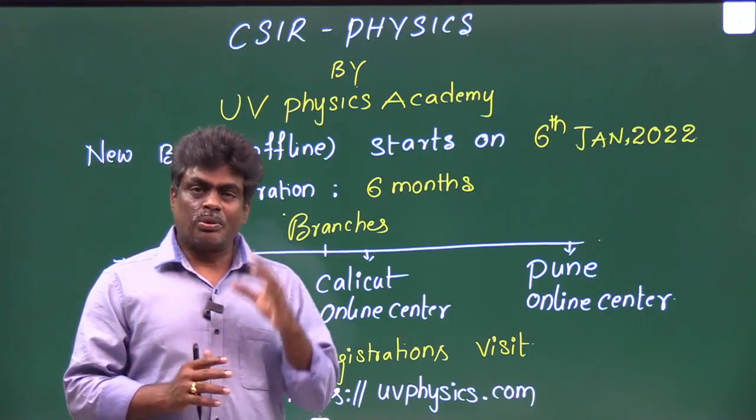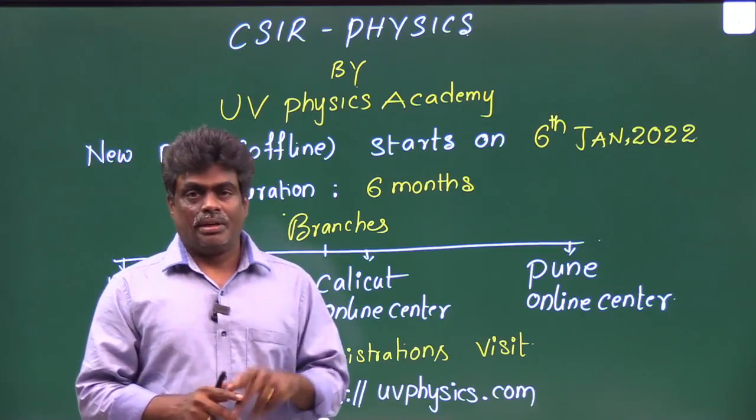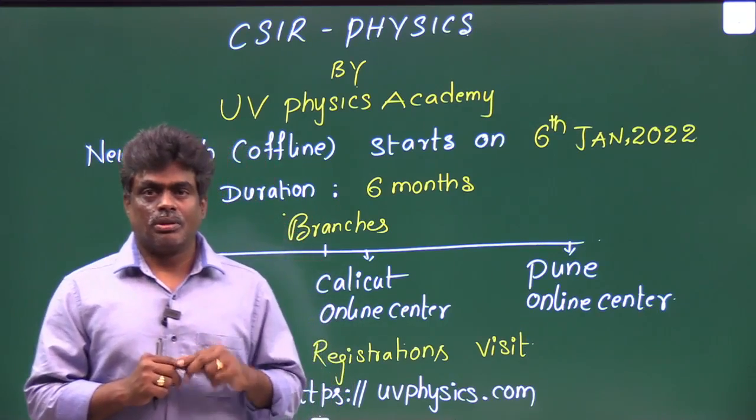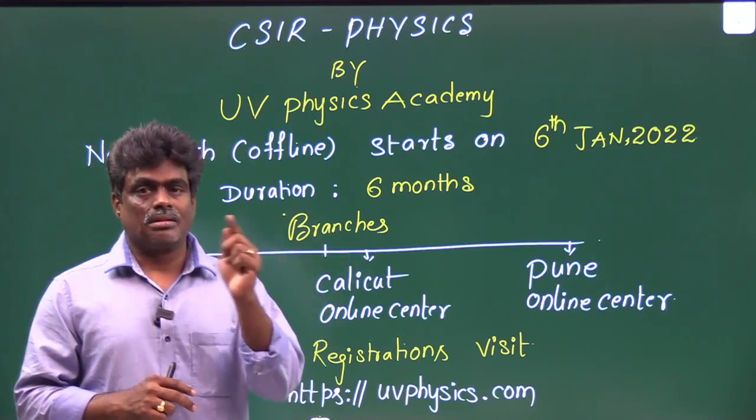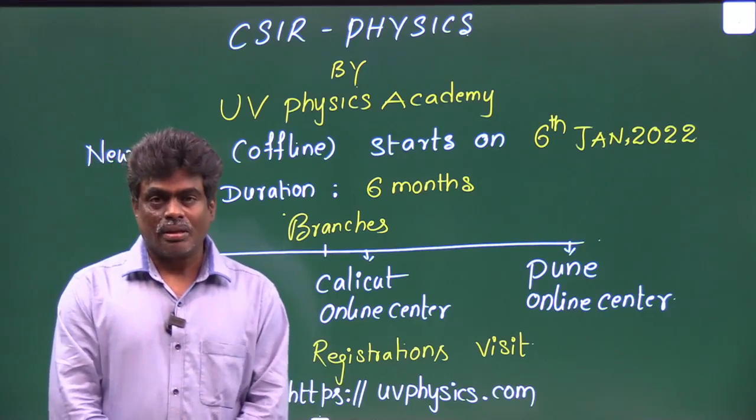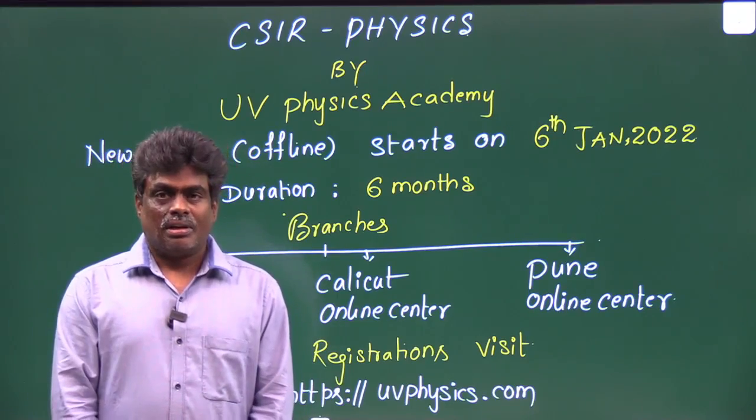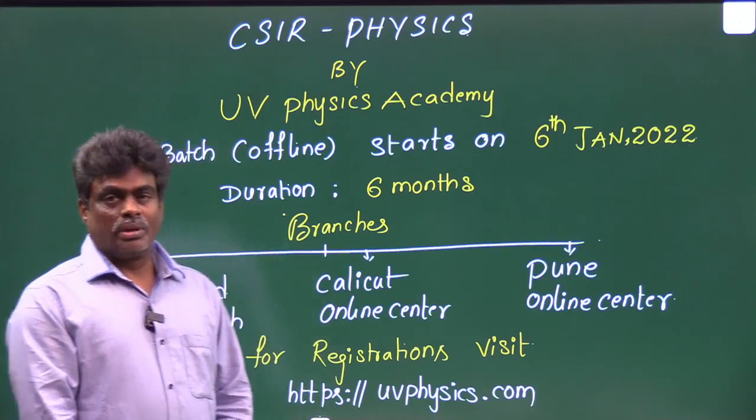Welcome to UV Physics Academy. We are going to start a new offline batch for CSIR Physics on 6th January 2022. The duration is six months and you can apply to any of these branches.